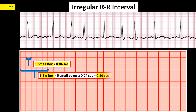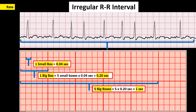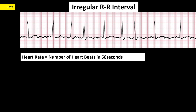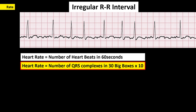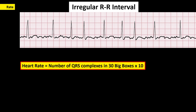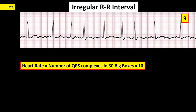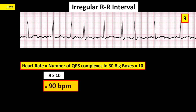For an irregular R to R interval, you cannot use the 1500 formula. Knowing that 30 big boxes equals 6 seconds, and the heart rate is the number of beats in one minute or 60 seconds, we can determine the heart rate by counting the number of QRS complexes in 30 big boxes, multiplied by 10. For example, in this case there are 9 QRS complexes within 30 big boxes, so heart rate is 9 times 10, which equals 90 beats per minute.